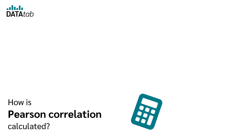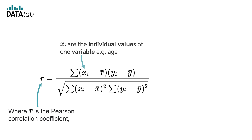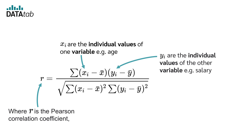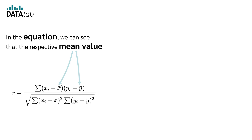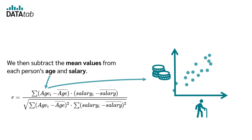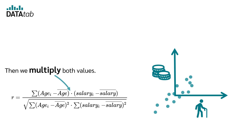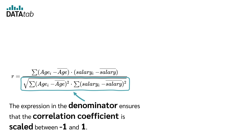How is Pearson correlation calculated? The Pearson correlation coefficient is obtained via this equation, where r is the Pearson correlation coefficient, xi are the individual values of one variable (for example, age), yi are the individual values of the other variable (for example, salary), and x-dash and y-dash are the mean values of the two variables. We subtract the respective mean from each value, multiply the results, and sum them up. The denominator ensures the correlation coefficient is scaled between minus 1 and 1.